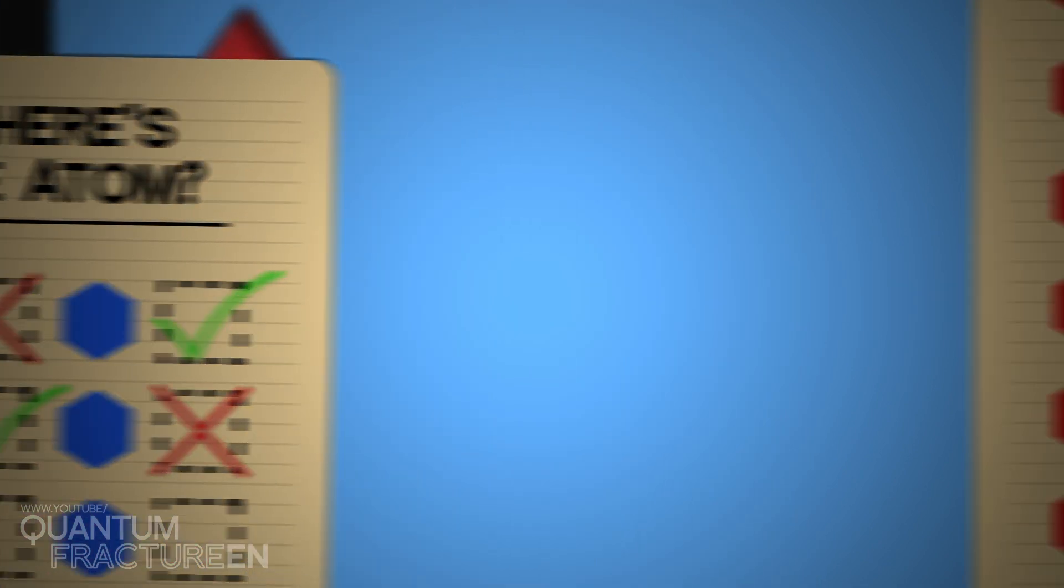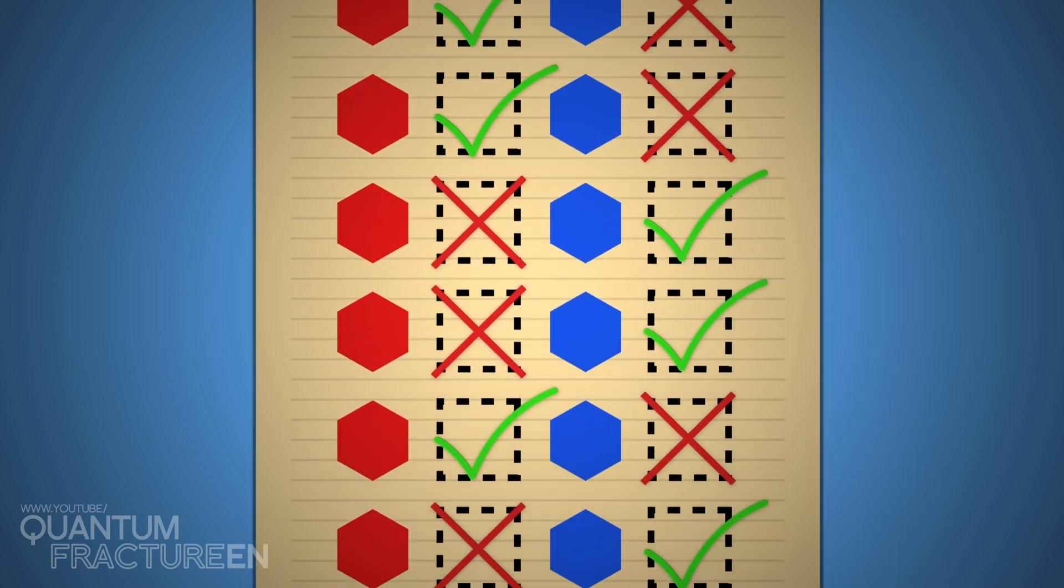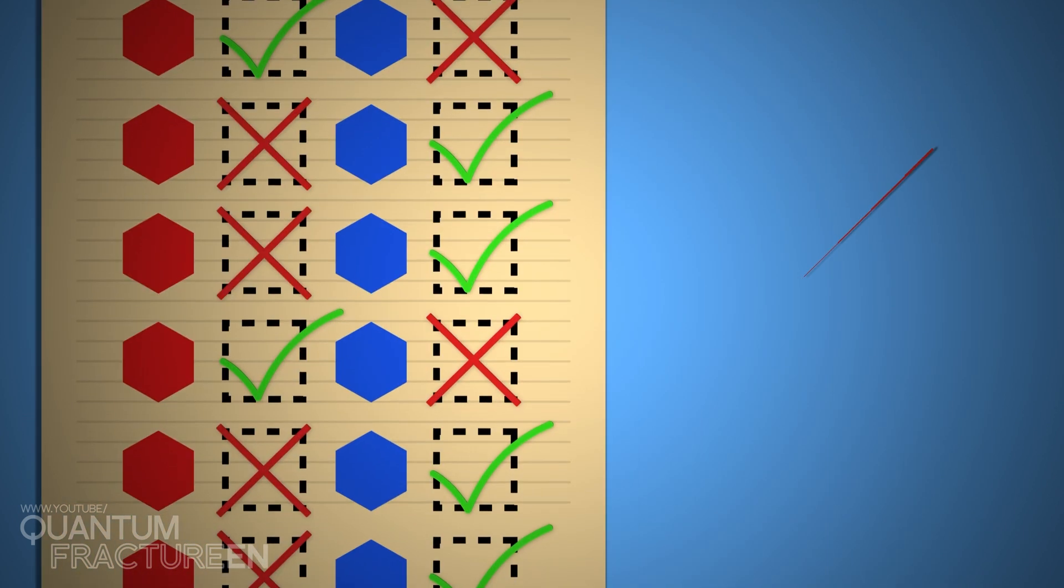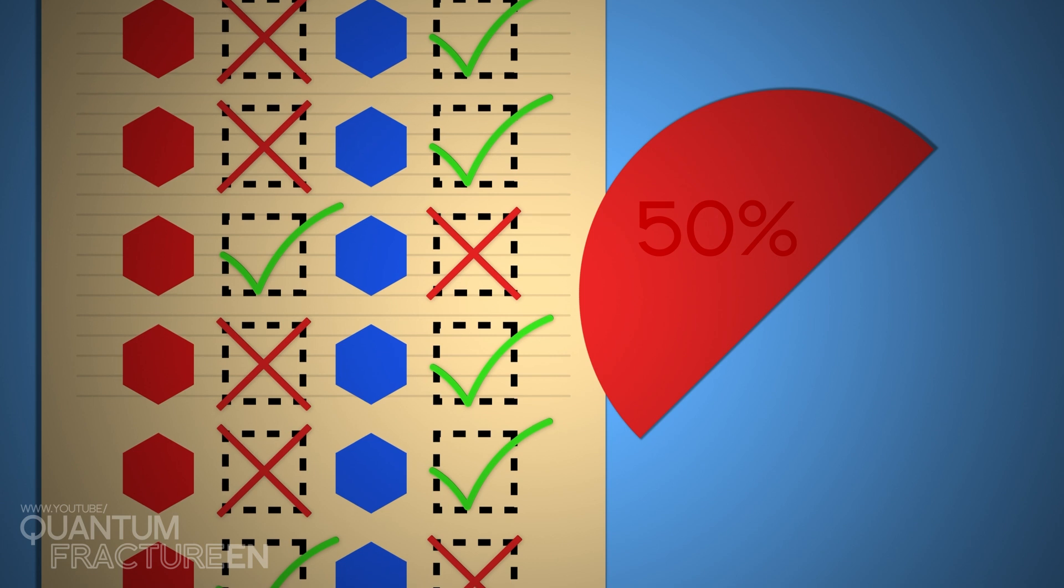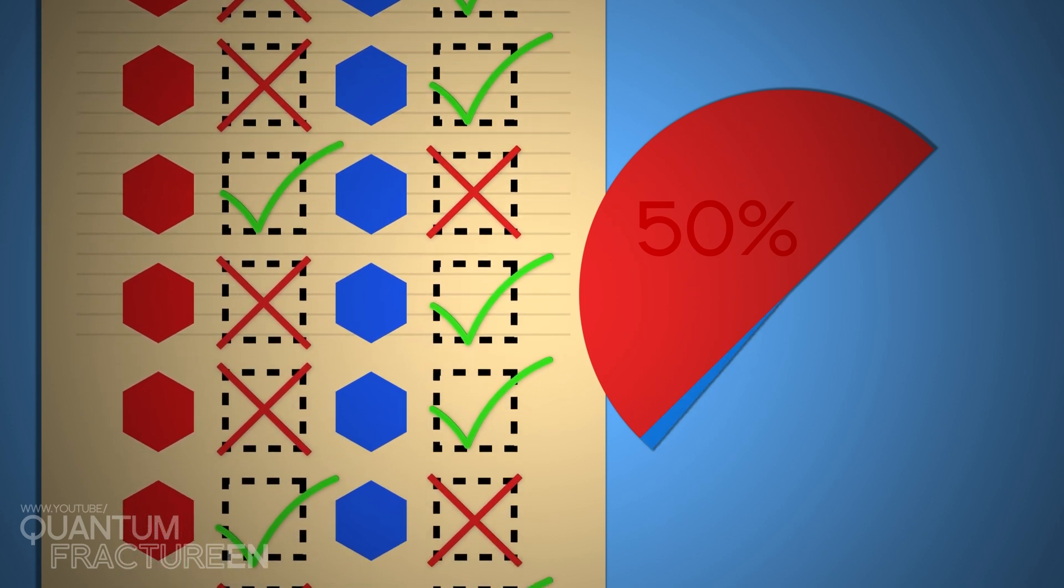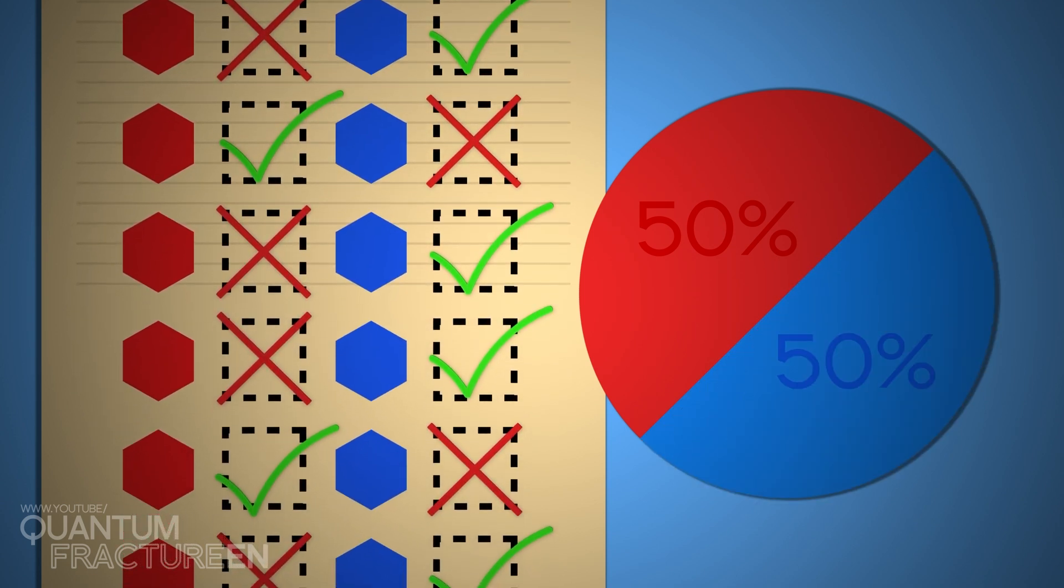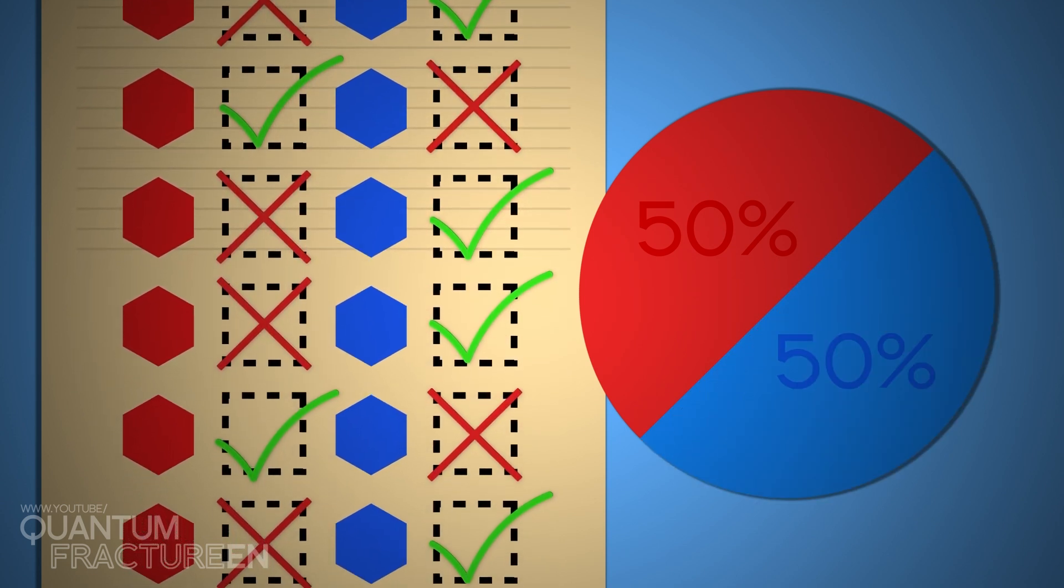You can probably imagine what'll happen if we repeat this over, and over, and over again. We'll end up with a checklist where roughly 50% of the atoms were in the red box, and the other 50% were in the blue box. This randomizing machine is good at its job.